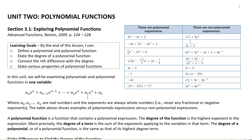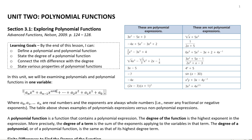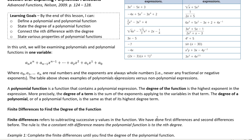In this unit we will be examining polynomials and polynomial functions in one variable — so we're only looking at polynomial functions with the variable x. In the table you can see examples of polynomial function expressions versus expressions that are not polynomial functions. The characteristics of polynomial functions are: the coefficients a₀, a₁ up to aₙ are real numbers, and the exponents are always whole numbers.